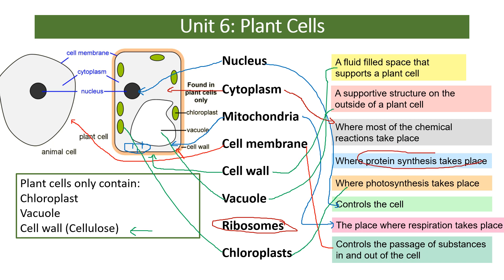Ribosomes are found in both animal and plant cells — that's where protein synthesis takes place. They're often represented as dots on cell diagrams. Animal cells are an irregular shape whereas plant cells are more regular and have those three extra structures: a chloroplast, a vacuole, and a cell wall. Both types of cells are eukaryotic cells because they have a nucleus.